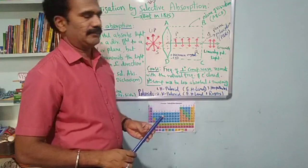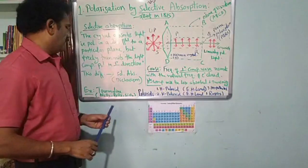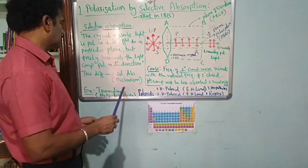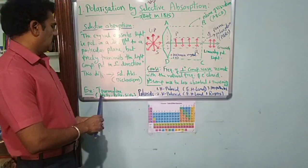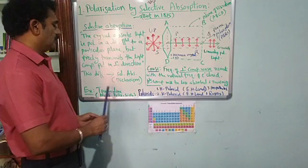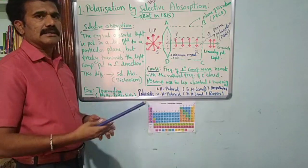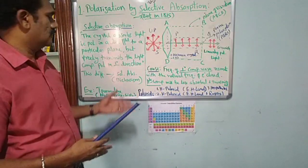What kind of material is the tourmaline crystal? It is made up of naturally occurring Al₂O₃, B₂O₃, plus silicon oxide all together. This kind of naturally available mineral crystal is called a tourmaline crystal.